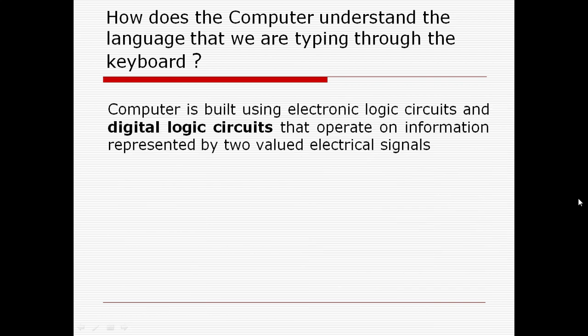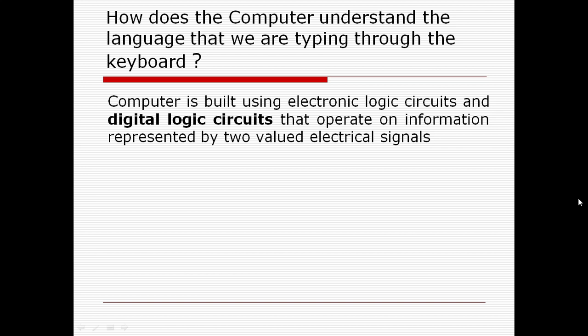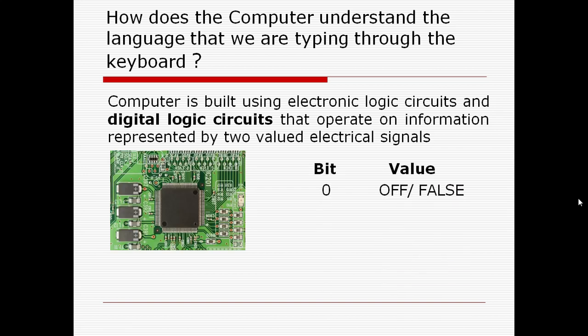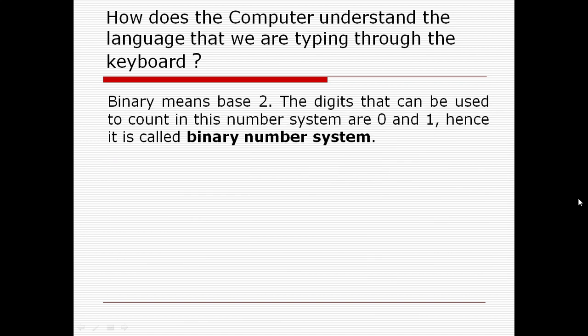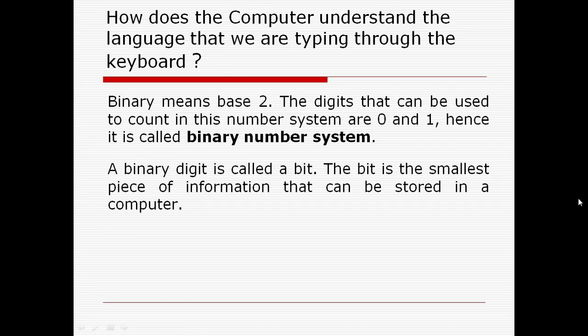Computer is built using electronic digital circuits and digital logic circuits that operate on information represented by two-value electrical signals: zero or false, one or true. It executes only programs that are written in the binary number system. Binary means base 2. The digits that can be used to count in this number system are 0 and 1, hence it is called binary number system.